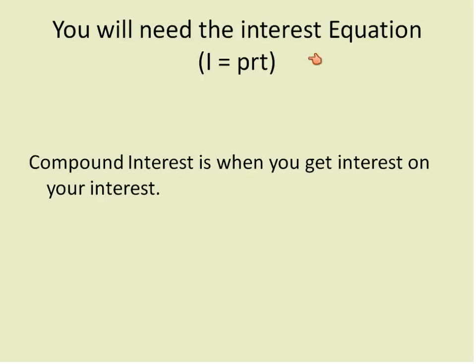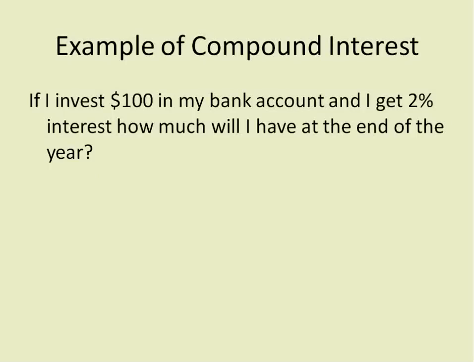We have the equation for simple interest: interest is equal to the principal times the rate times the time. Compound interest is when you get interest on interest. For example, if I have $100 in my bank account and I get 2% interest, using the simple interest equation — principal times interest rate times time of one year — I would get $2 interest.